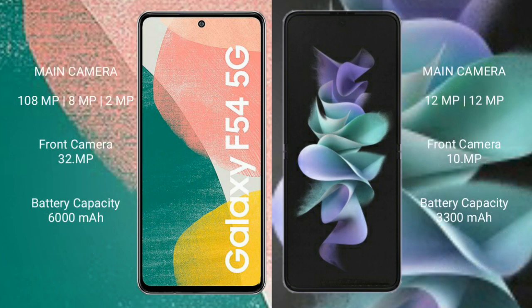The Samsung Galaxy A54 features a rear triple camera setup: 108MP plus 8MP plus 2MP, and a 32MP front camera. The Samsung Galaxy Z Flip 3 features a rear dual camera setup: 12MP plus 12MP, and a 10MP front camera.